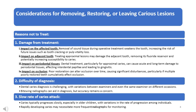Treating proximal lesions may remove the fluoride reservoir of the adjacent tooth, potentially increasing susceptibility to caries. Impact on periodontal tissues: dental treatment, particularly for proximal caries, can cause acute and long-term damage to periodontal tissues, affecting interdental papillae and leading to gingivitis. Impact on occlusion: poor restoration can alter occlusion over time, causing significant disturbances, particularly if multiple poorly restored teeth cumulatively affect the bite.